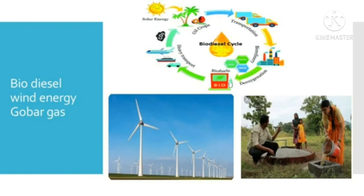Wind energy is obtained with the help of windmills. When wind blows, it rotates the blades of the windmills and current is produced in the dynamo. Windmills are mostly located at Kayathar, Aral Vaimuli, Palladam and Kudimangalam in Tamil Nadu. Gobar gas is obtained by the fermentation of cow dung in the absence of air, that is anaerobic conditions. Gobar gas mainly contains methane and a little ethane. It is widely used in rural areas for cooking and operating engines.